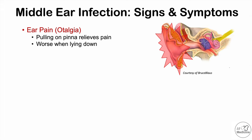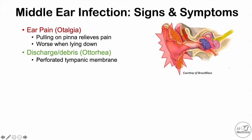This otalgia is worse when lying down, so it is oftentimes worse at night for these patients. Some other signs include discharge or debris — otorrhea — which most often occurs in the setting of a perforated tympanic membrane. If there's a hole in the eardrum, the fluid behind it can leak out and be seen coming from the ear.